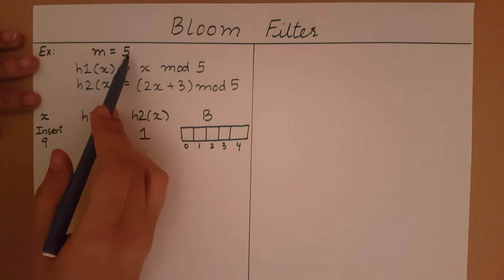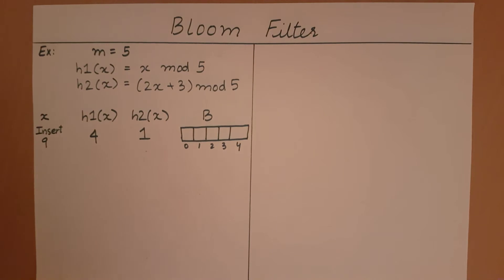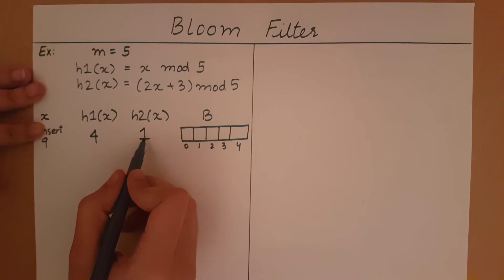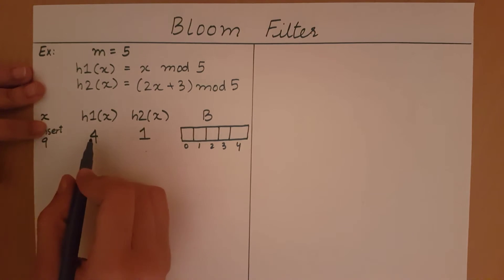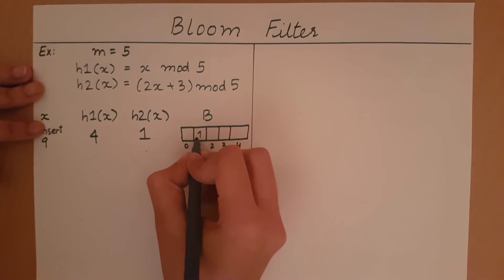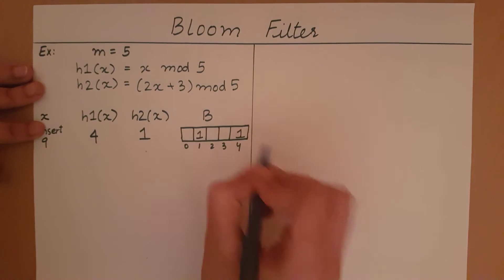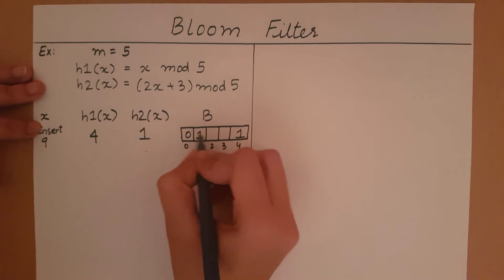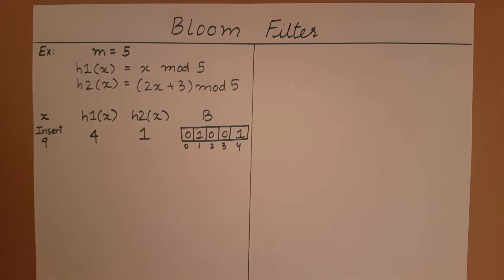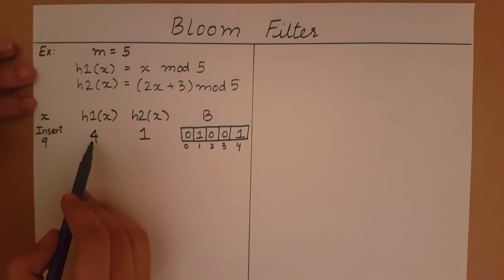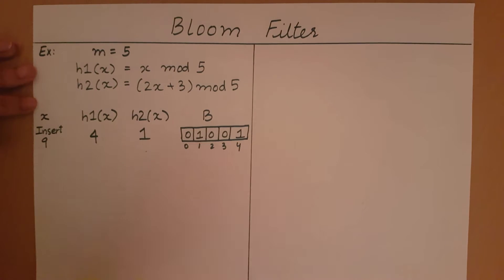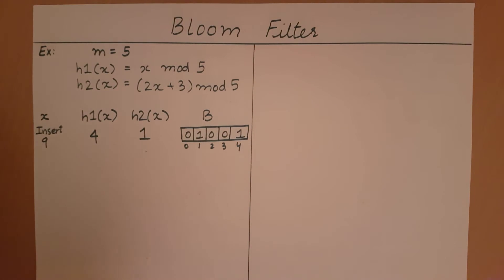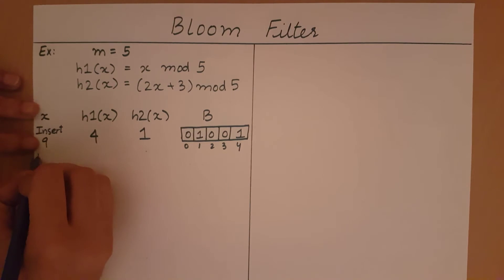We have an array of 5 elements — the bloom filter is of size 5, initialized to all zeros. Based on the hash results 4 and 1, we set index 4 and index 1 to 1. All other indexes remain 0.